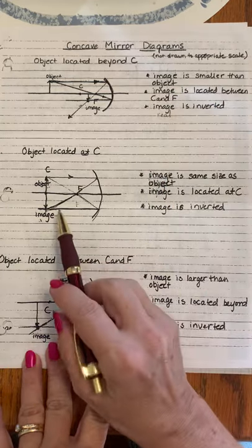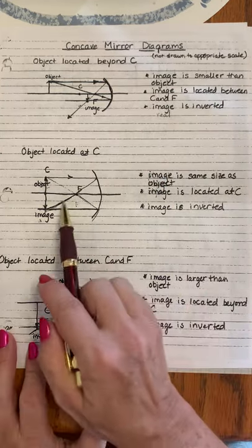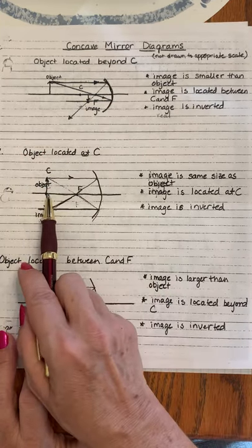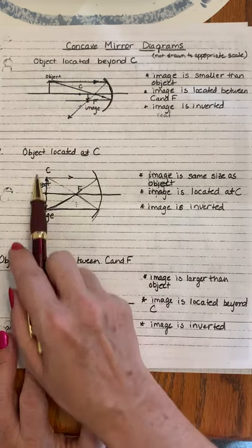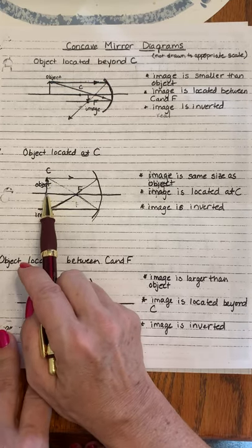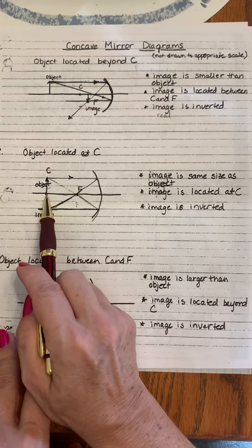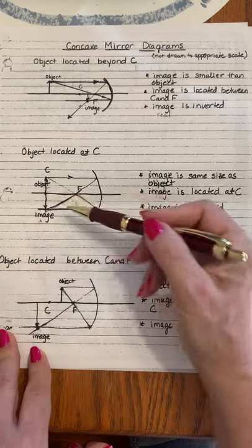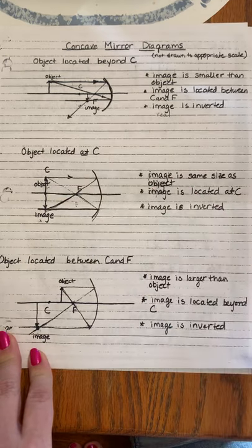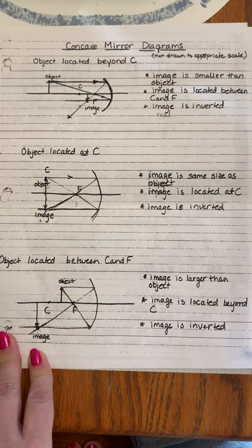Now when you look at this one, the difference is I've moved the object up here to C. So this is at C. When we do all the arrows and everything, we'll find that if your object that you're putting in front of the mirror is exactly at the center of curvature, it will be the exact same size as the object. The image will be, and it will be upside down. Same size.